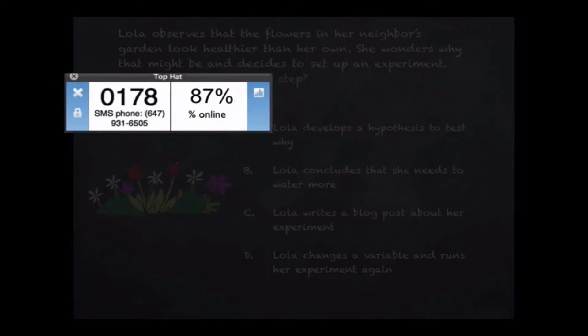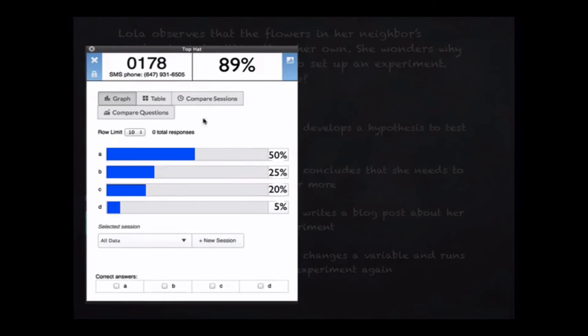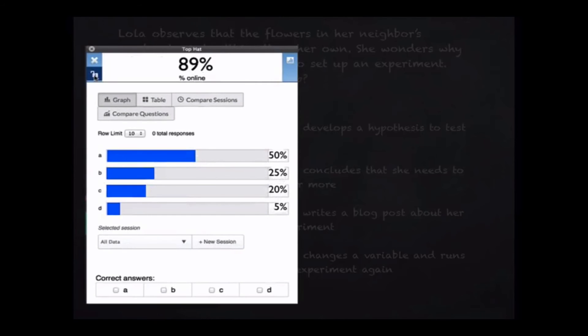The question will automatically be asked, and students will see the four digit SMS code to submit their responses. The graph icon will show you real-time feedback as to how your students are responding. You can lock the question from receiving any further submissions by selecting the lock icon, and then choose the correct response so that your students can be marked for correctness and can come back for review later.